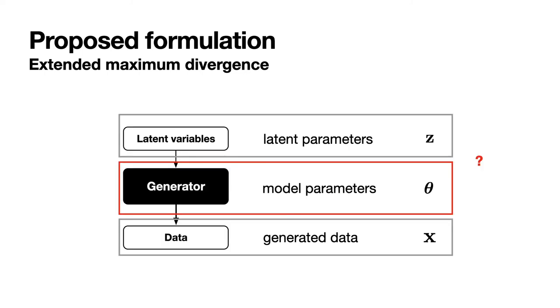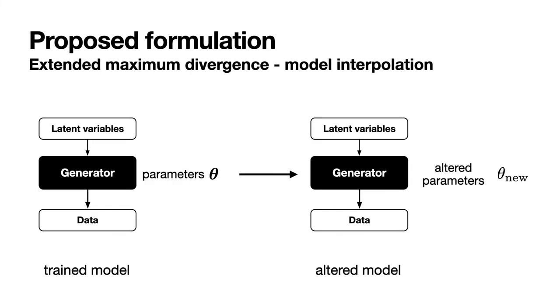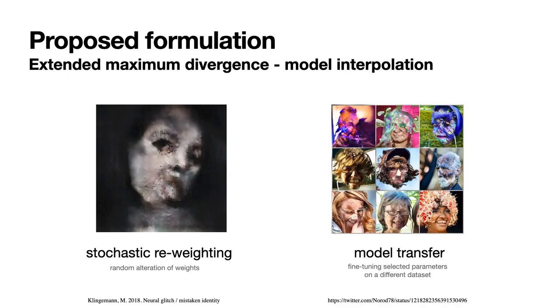Now, let's think about applying this objective to model parameters. Applying maximum divergence to a pre-trained model would logically provide a similar model with altered parameters, whose amount of deviation is given by the divergence amount. This process can be done in several ways, for example, stochastic rewriting, consisting in random weight alteration, or model transfer, retraining specific layers of a generator with another dataset.